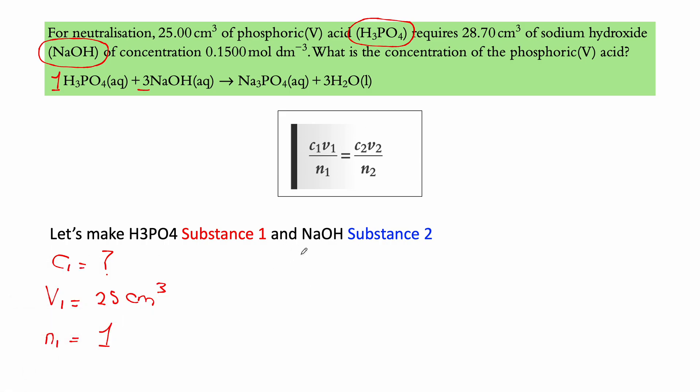And for substance 2, C2 refers to the concentration of NaOH. We know that the concentration of NaOH is right here, 0.1500 mole dm cube, mole dm cube. Again, this is just mole per liter. And we have the volume of NaOH as well, which is right here. The neutralization of this H3PO4 requires 28.70 of the sodium hydroxide. So it's 28.70 cm cube. And the coefficient is given from the equation, which we determined was three.